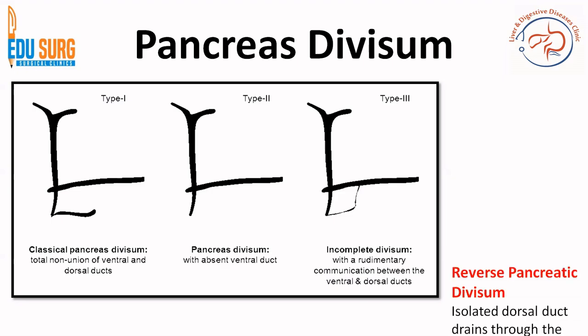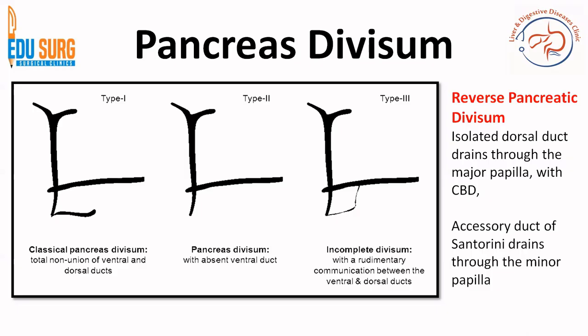There is also an interesting phenomenon known as reverse pancreatic divisum. Here, the isolated entire dorsal duct — which should have formed the Santorini duct — instead drains through the major papilla and unites with the common bile duct, while a small accessory duct drains through the minor papilla. Normally the ventral duct joins the common bile duct, but in reverse pancreatic division it is the dorsal duct that does so.